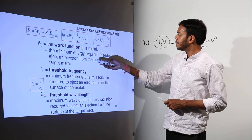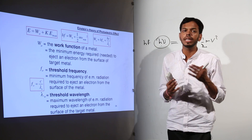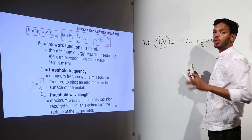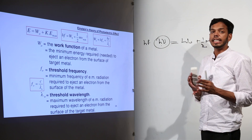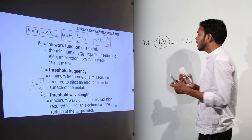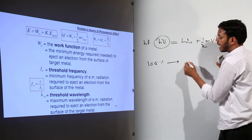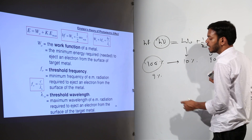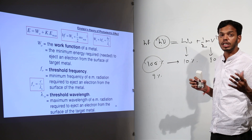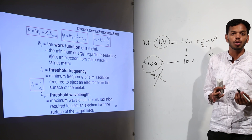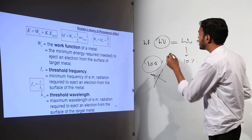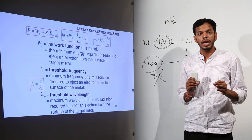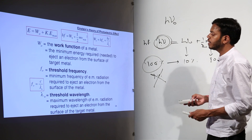The work function is the minimum energy needed to bring a free electron at least up to the surface of the metal. Threshold frequency is the minimum frequency of incident radiation below which photoelectric emission will not take place. If the incoming source has only 9% energy but the minimum required for the metal is 10%, no photoelectric emission occurs. That is why threshold frequency is important — it is the minimum frequency at which photoelectric emission takes place, and correspondingly there is a threshold wavelength.